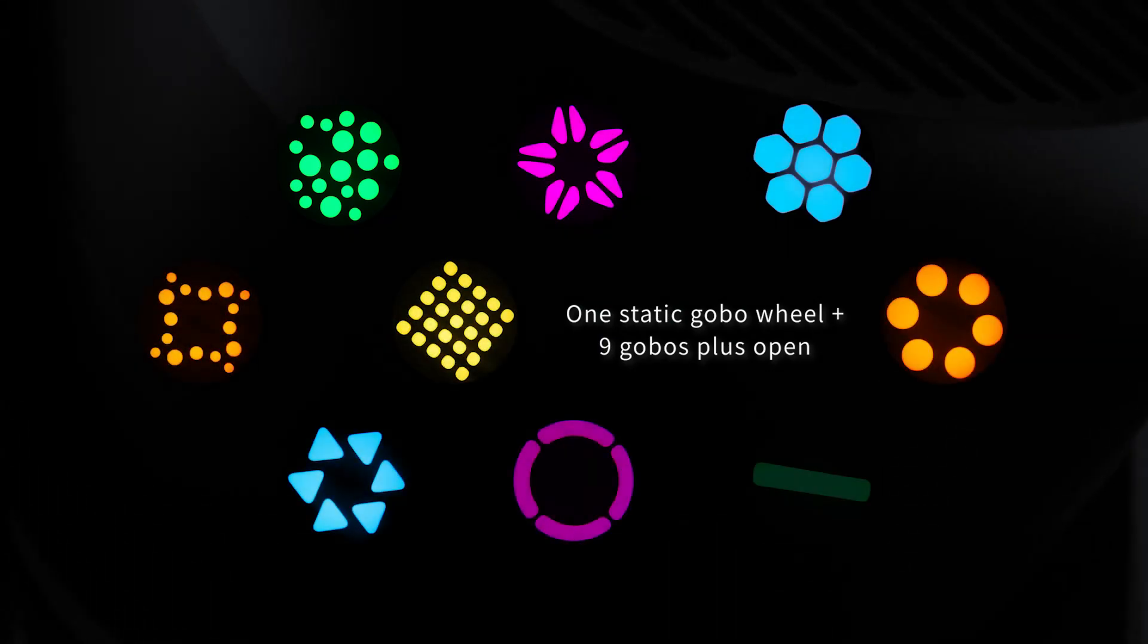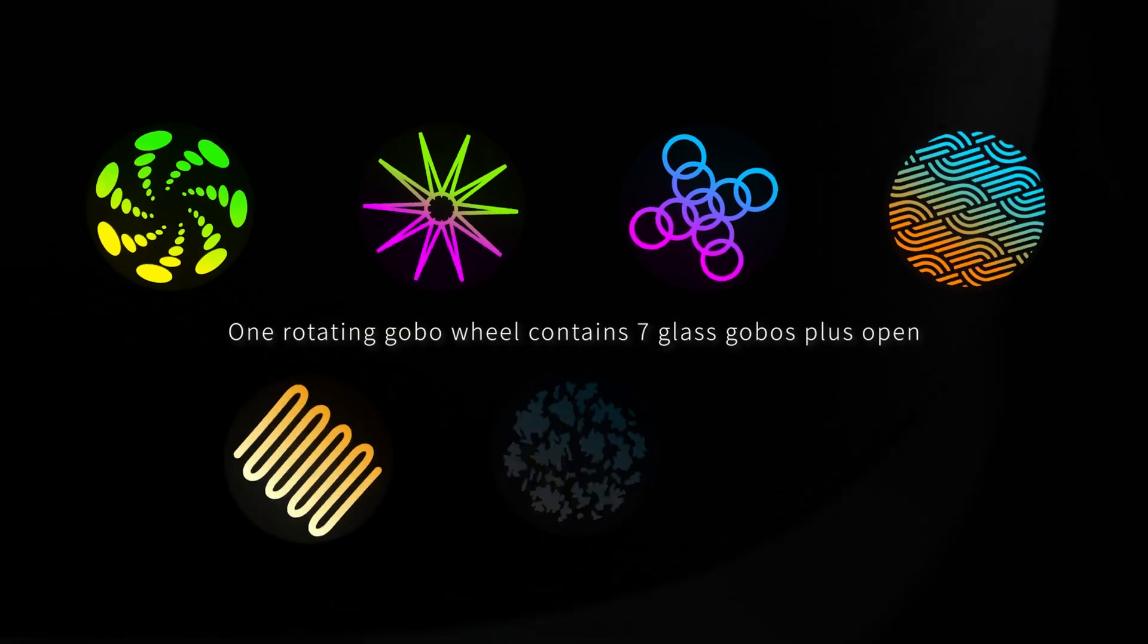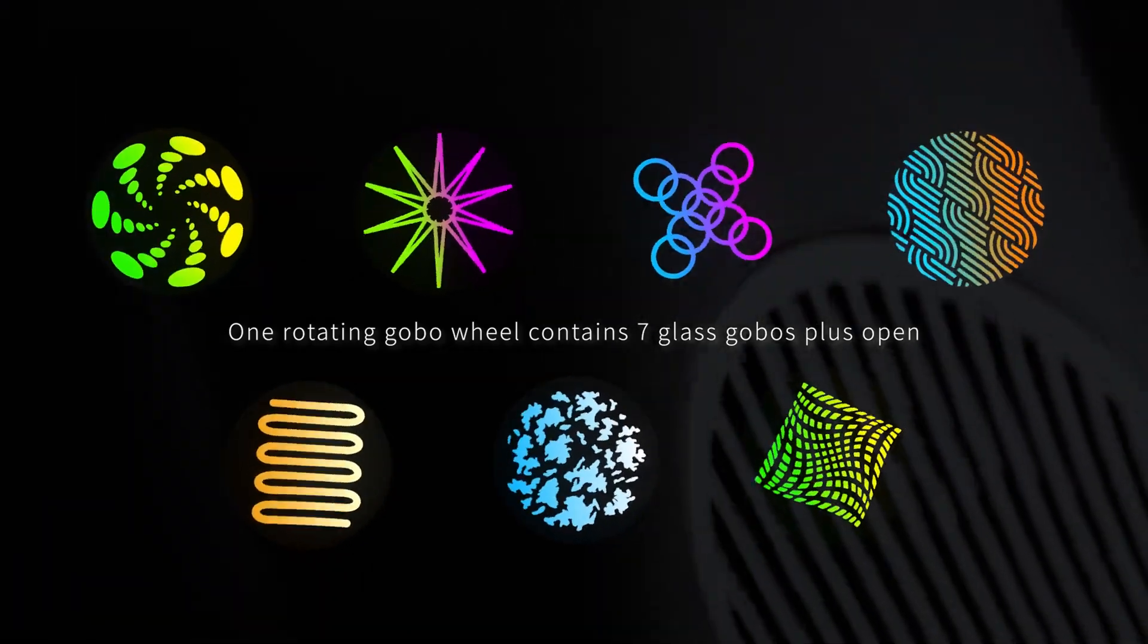One static gobo wheel includes 9 gobos plus open. One rotating gobo wheel contains 7 glass gobos plus open.